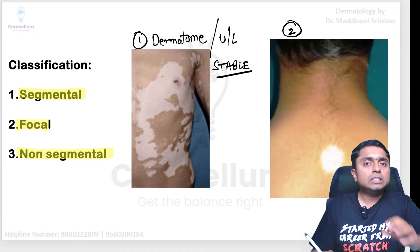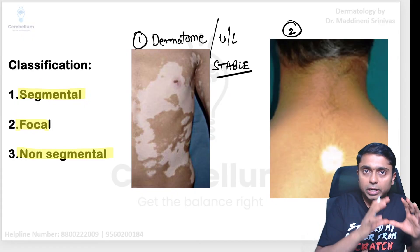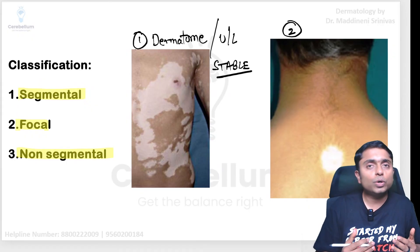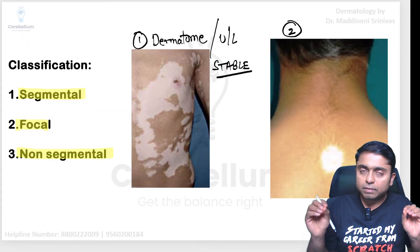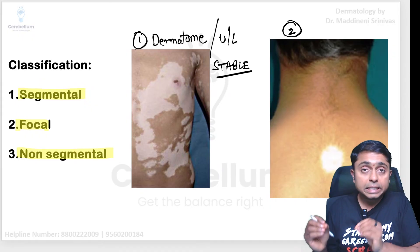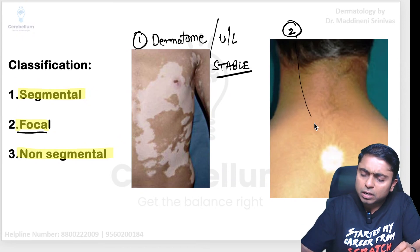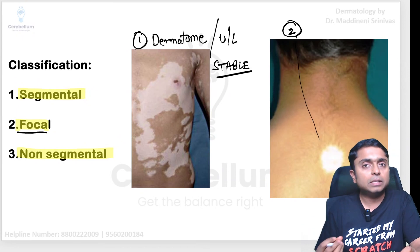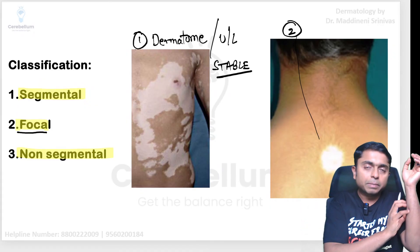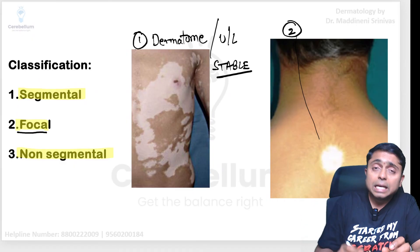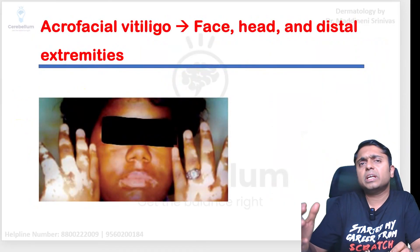Once a single dermatome is involved, the vitiligo becomes stable — it will not progress to involve other body areas. One dermatome is involved and that is all; it will not spread, making it a stable vitiligo. Next is focal vitiligo, where one or two depigmented macules and patches are present which can involve more than one dermatome. So one depigmented lesion here, another there — we categorize these patients as focal vitiligo.